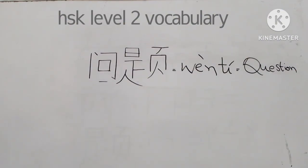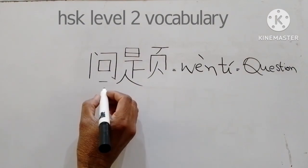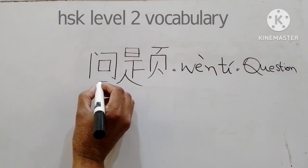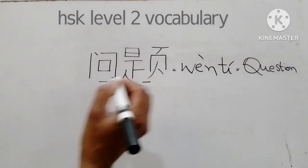Now we come to the writing of the character — how this character is written with its stroke names and stroke order. It consists of two parts: VEN-THEE.